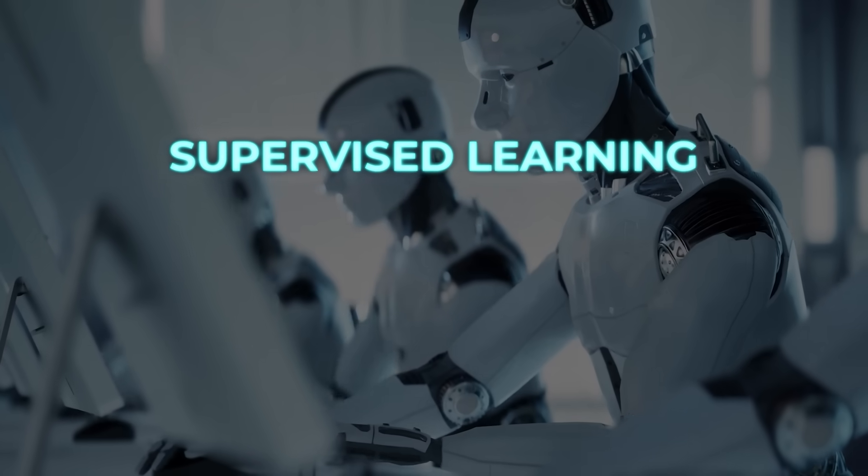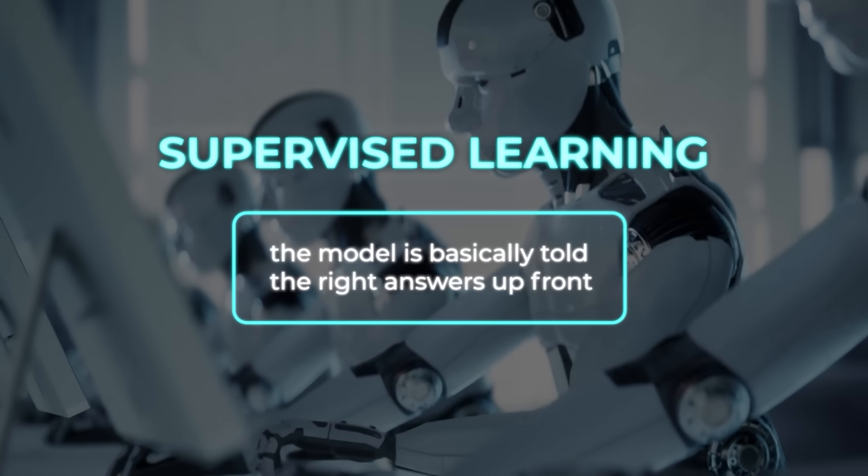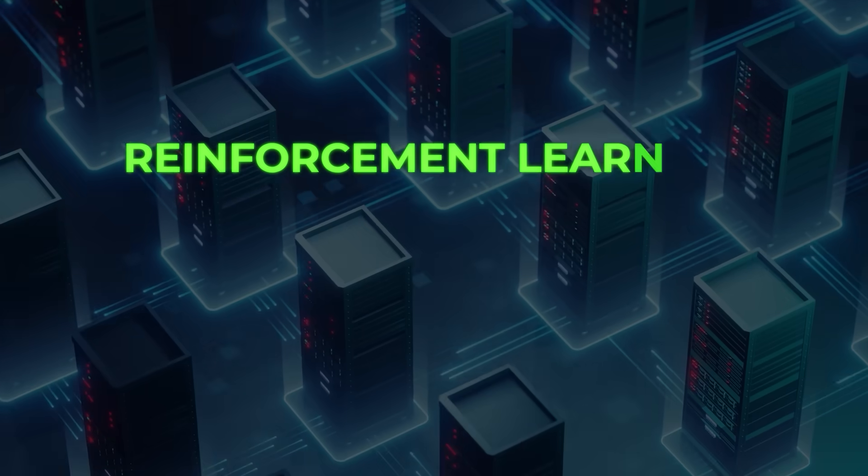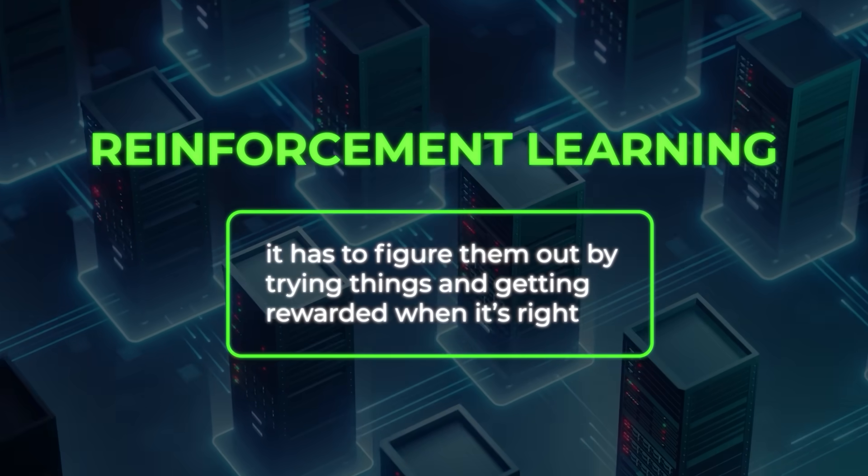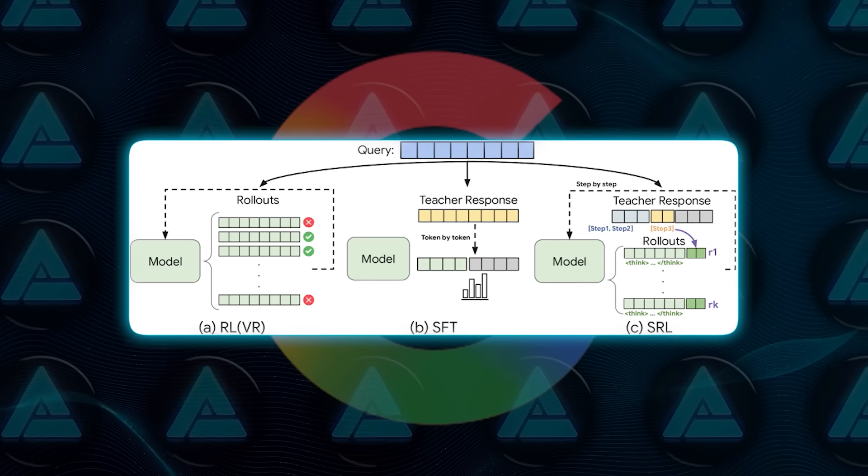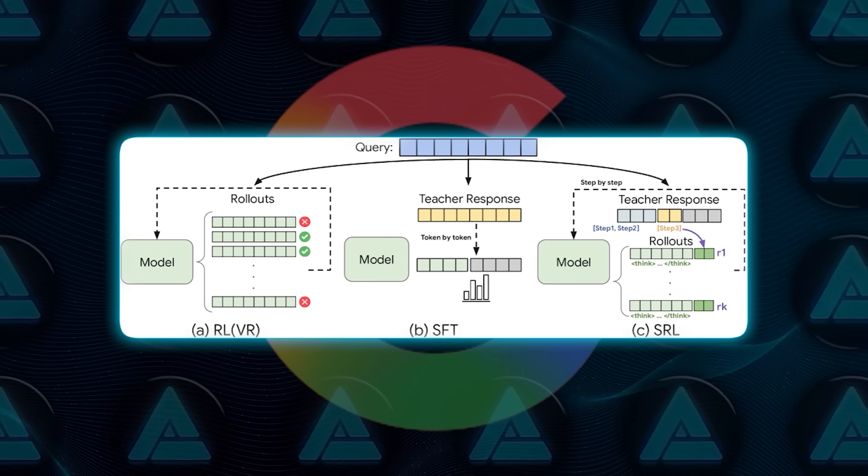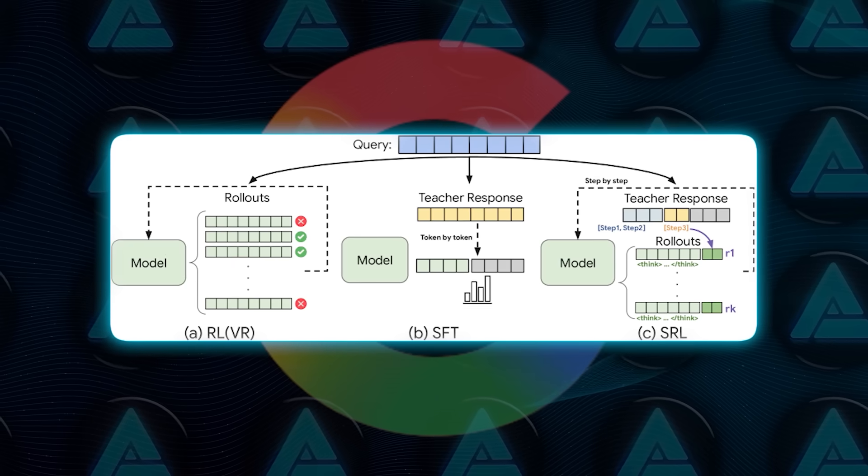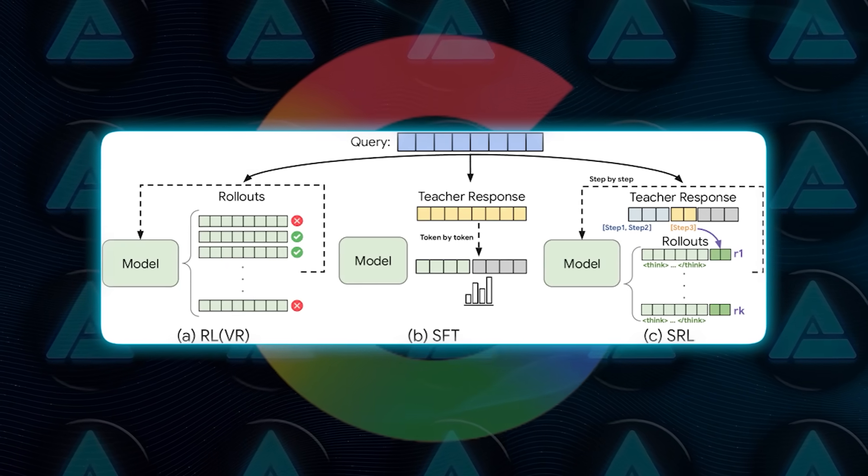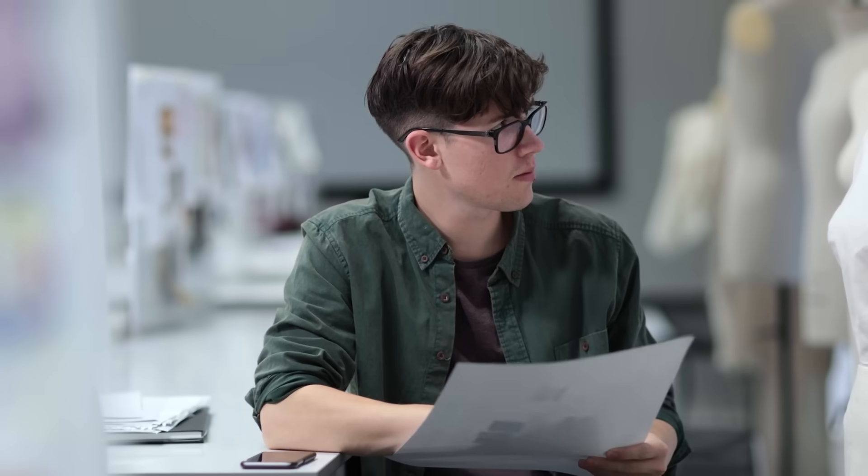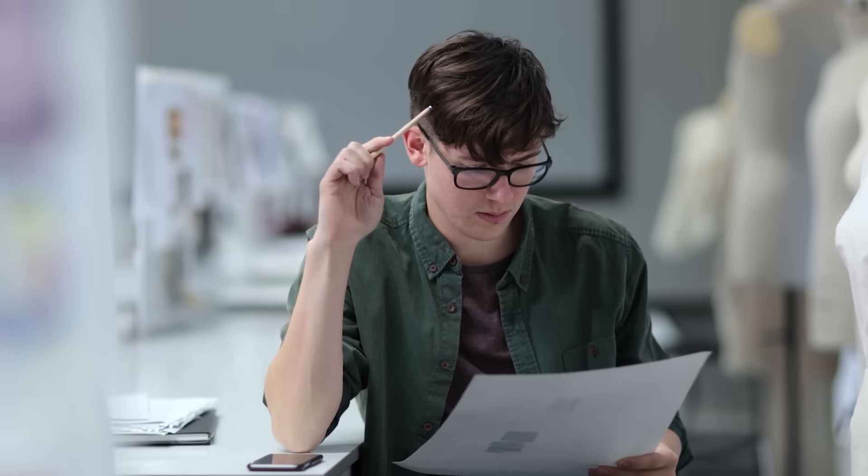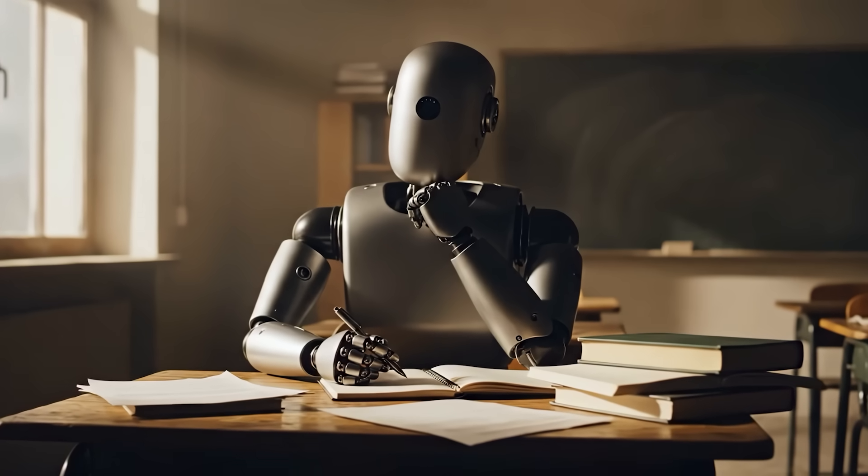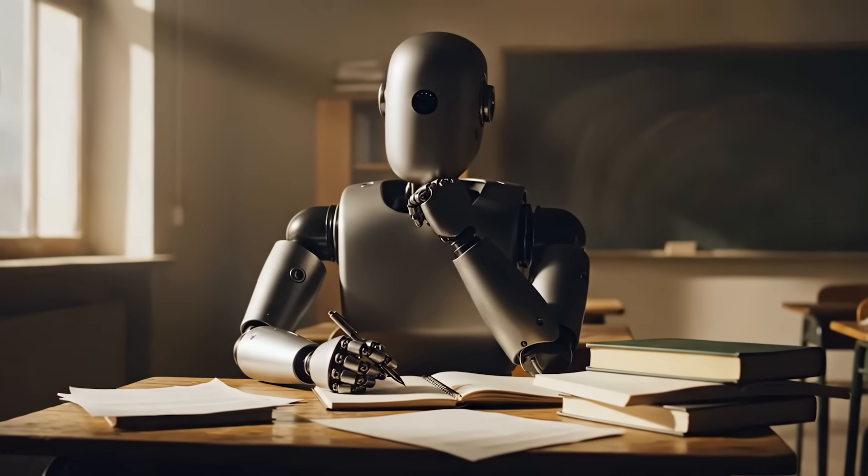In supervised learning, the model is basically told the right answers up front. In reinforcement learning, though, it has to figure them out by trying things and getting rewarded when it's right. Google's twist is that SRL gives the model the right answers, but still makes it earn them through rewards. Kind of like giving a student the solution key, but still making them solve each step to prove they understand it. It sounds contradictory, yet it works brilliantly, and that's what makes it genius.